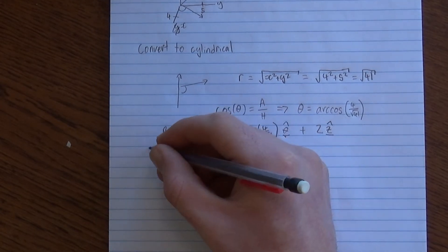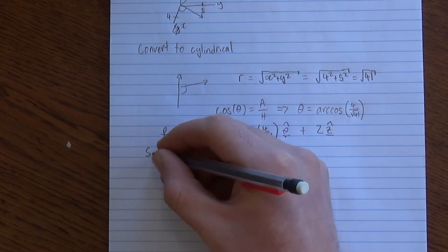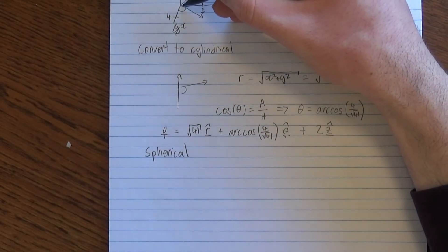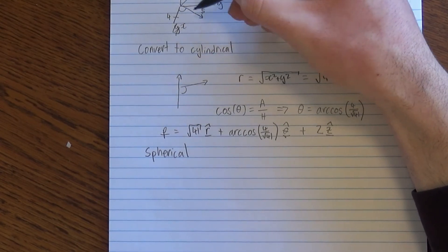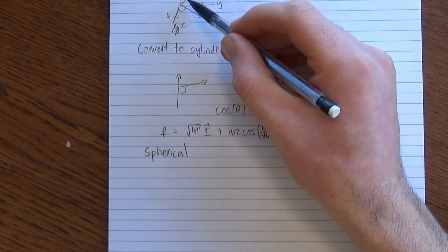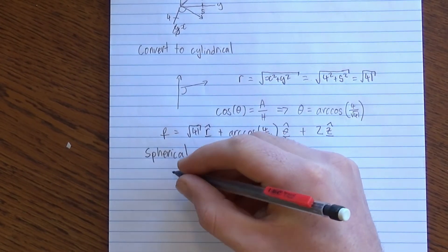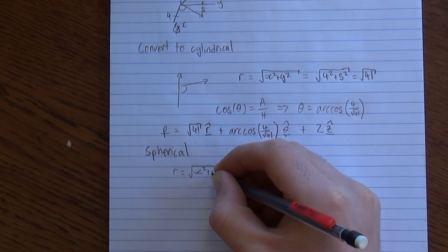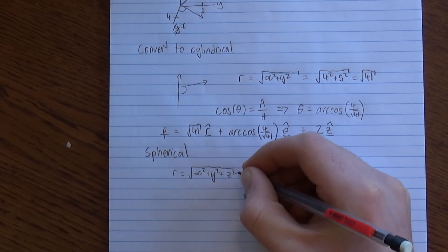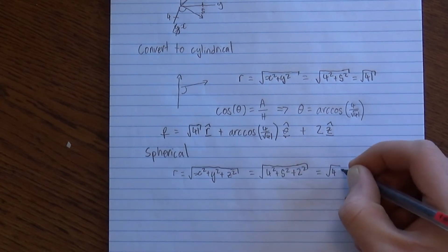Now we want to go to spherical coordinates, and this time, instead of having our radius just being this projected radius onto the xy plane, we want our radius to actually be this whole radius here, which is going to be x squared plus y squared plus z squared, square rooted, root 45.